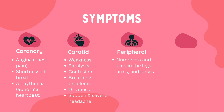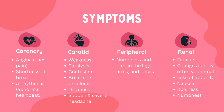The peripheral arteries supply blood to the legs, arms and pelvis. Symptoms include numbness and pain in those areas. Lastly, the renal arteries supply blood to the kidneys. Symptoms include fatigue, changes in how often you urinate, loss of appetite, nausea, and itchiness or numbness.